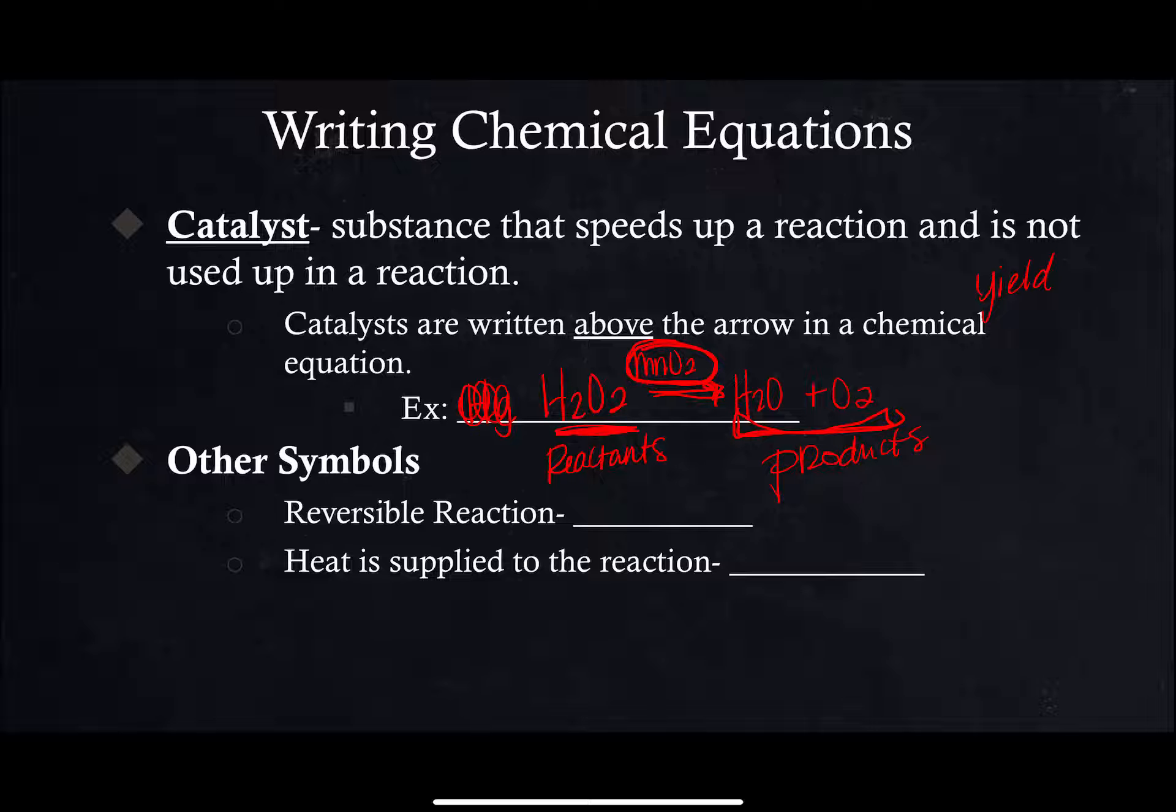Other symbols that you can sometimes see: sometimes you'll see a reversible reaction, indicated with this symbol. You have a half arrow in one direction over top of a half arrow in the other direction, and that means a reaction proceeds in both directions, it goes forward and reverse.